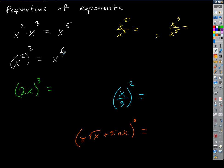What about this one? The quantity 2X cubed — it's going to be 2 cubed times X cubed, which is 8X cubed. The moral of the story is when you have a product — not when you're adding or subtracting, but when you have a product — you can distribute the exponent to all the pieces. You can break it up into parts.